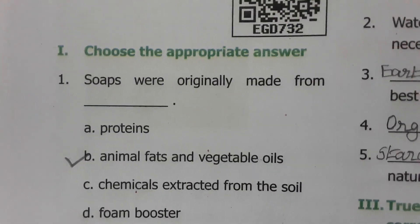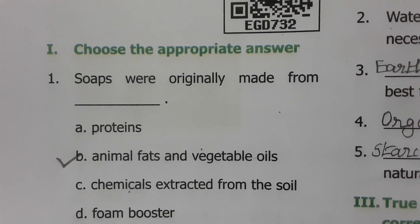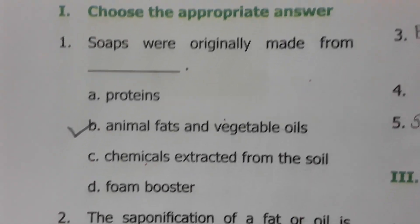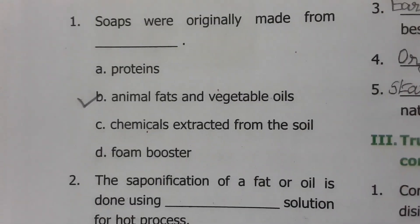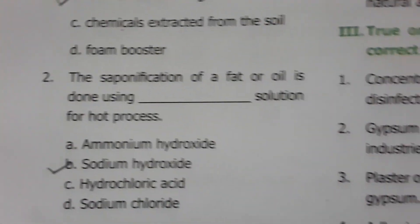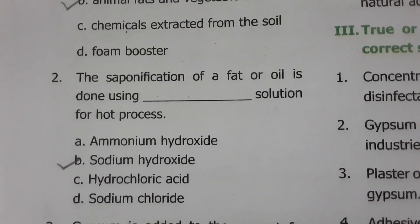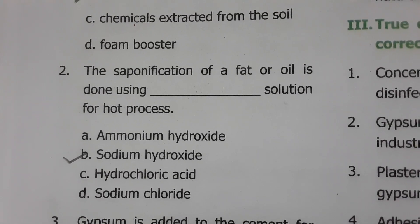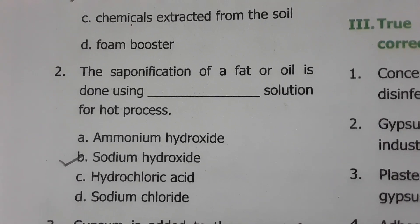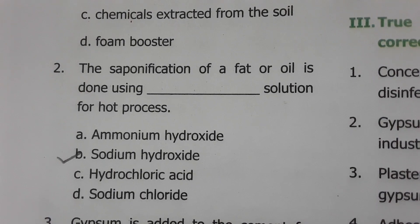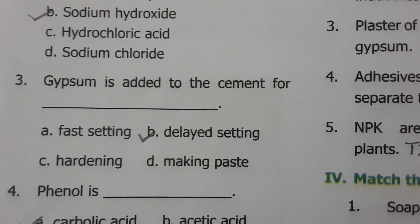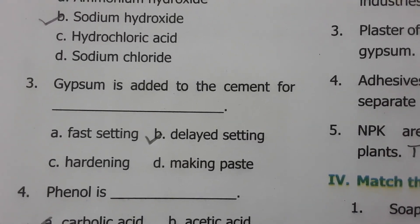Choose the appropriate answer: Soaps are originally made from animal fats and vegetable oils. The saponification of fat or oil is done using sodium hydroxide solution for hot processes. Gypsum is added to the cement for delayed setting.